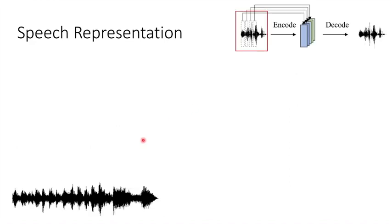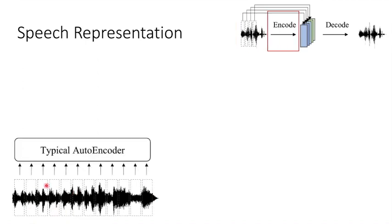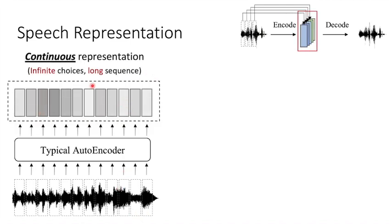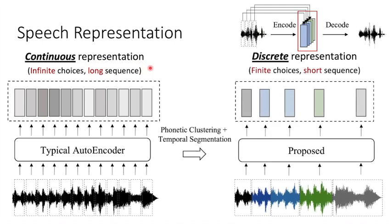So, to make things clear, given an audio, the typical autoencoder encodes each audio frame into a hidden vector. The hidden vector has infinite choices, and the sequence length of the hidden vectors will be the same as the input audio frames. If we apply the proposed phonetic clustering and temporal segmentation, the hidden vector will have finite choices, and the resulting hidden vectors will have roughly the same sequence length as the underlying phonetic sequence.